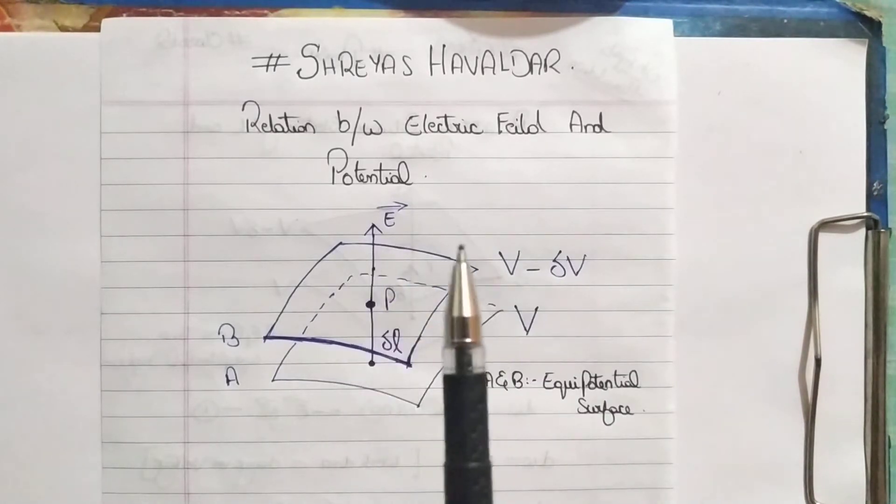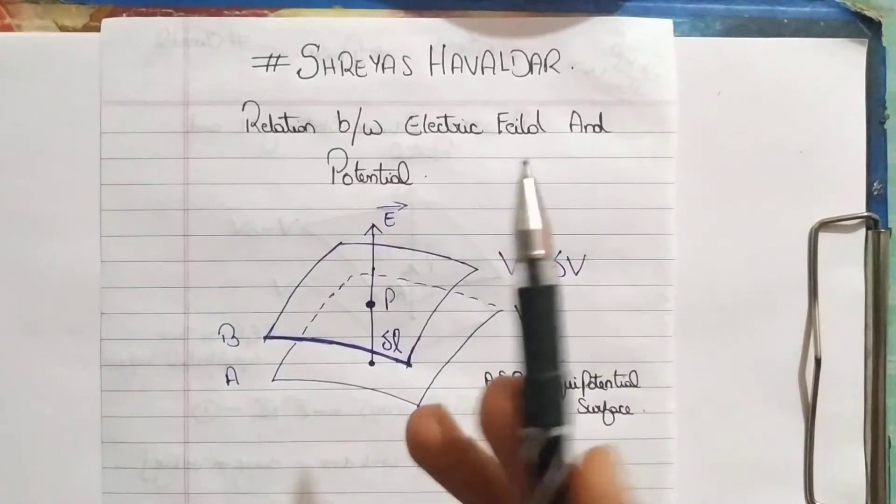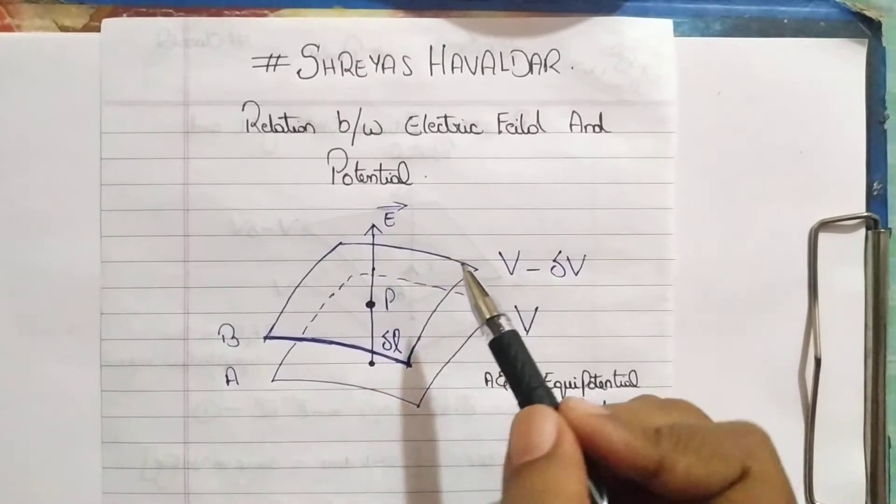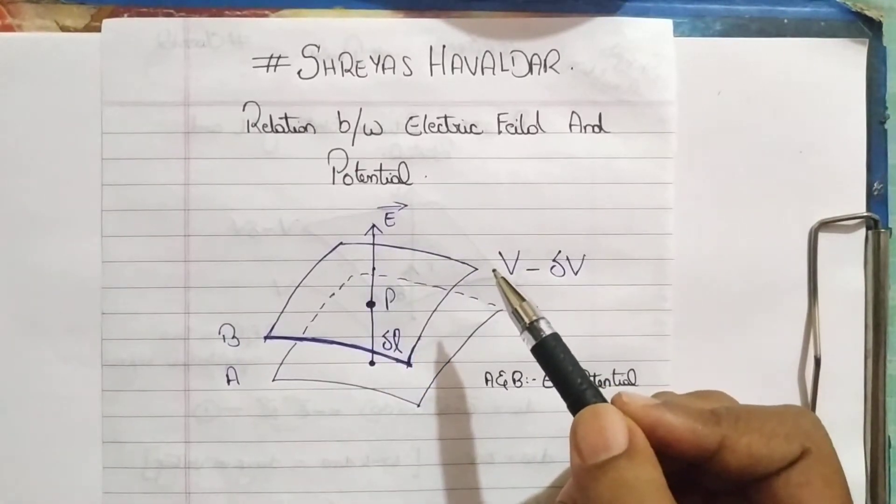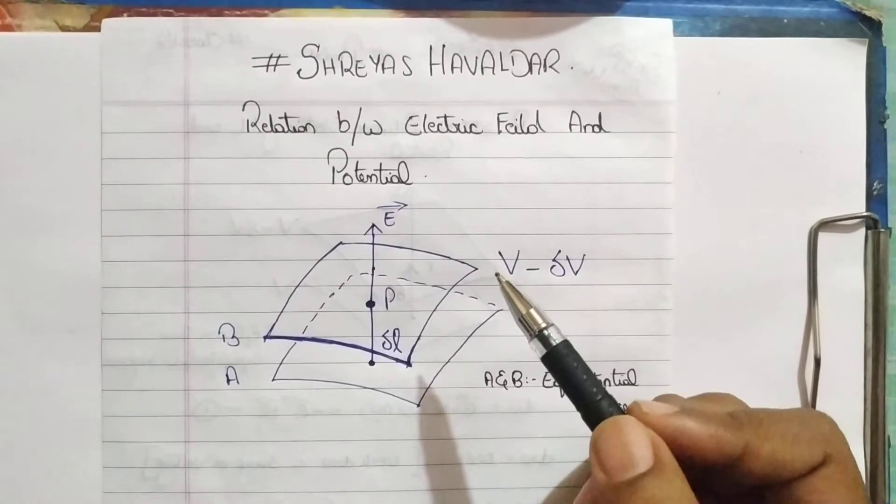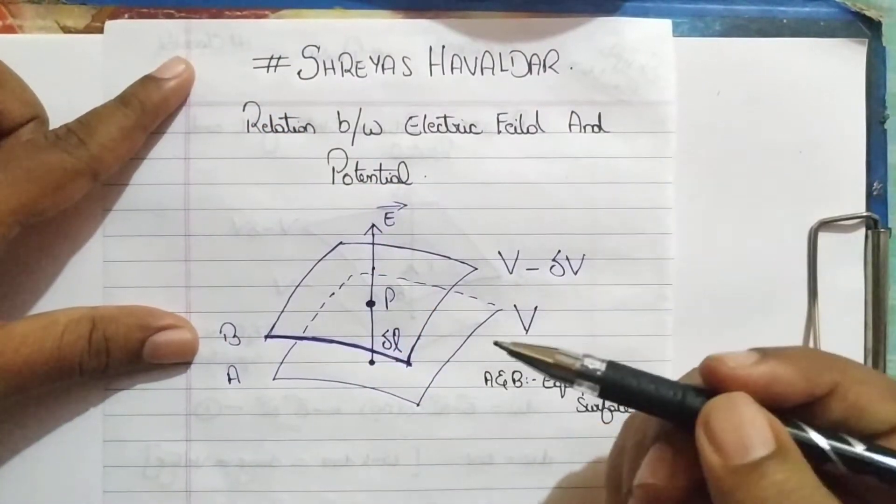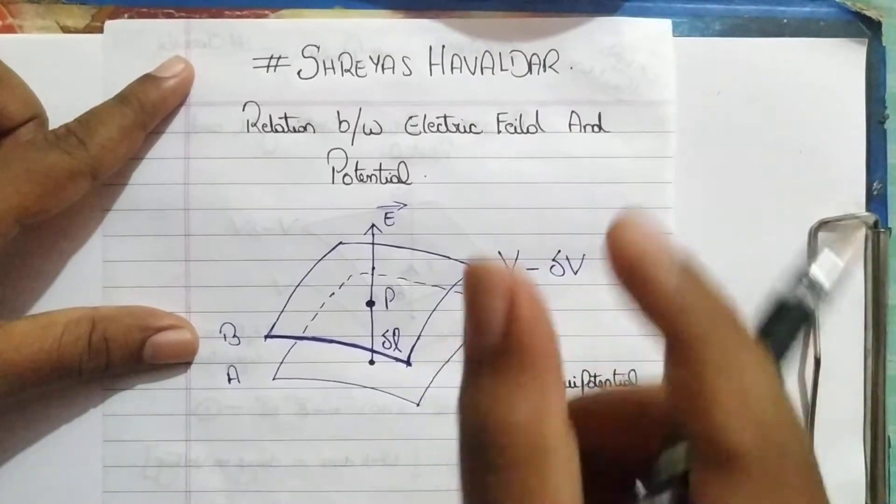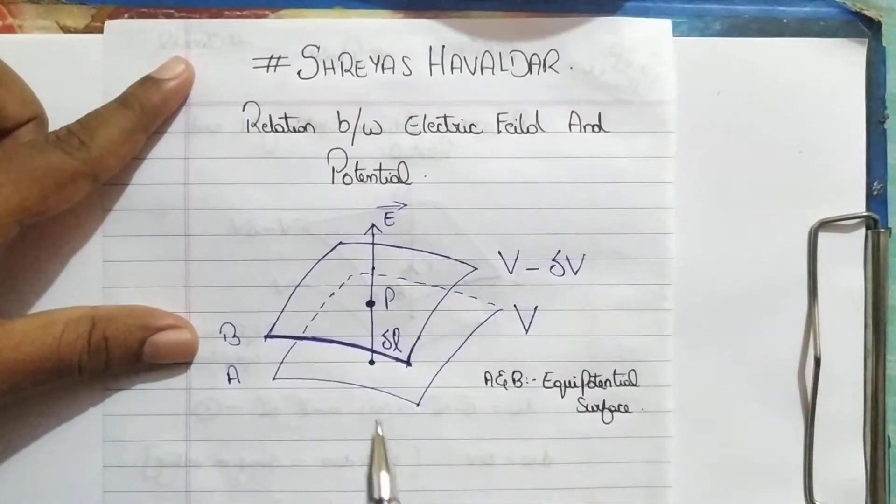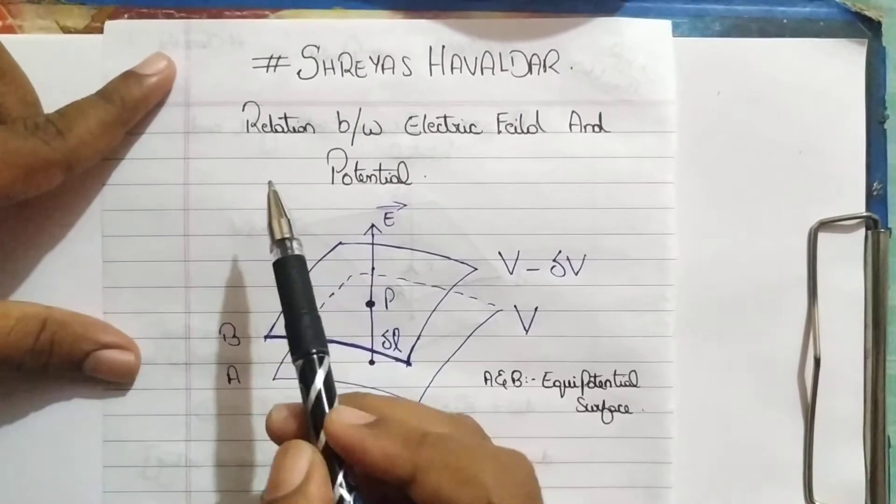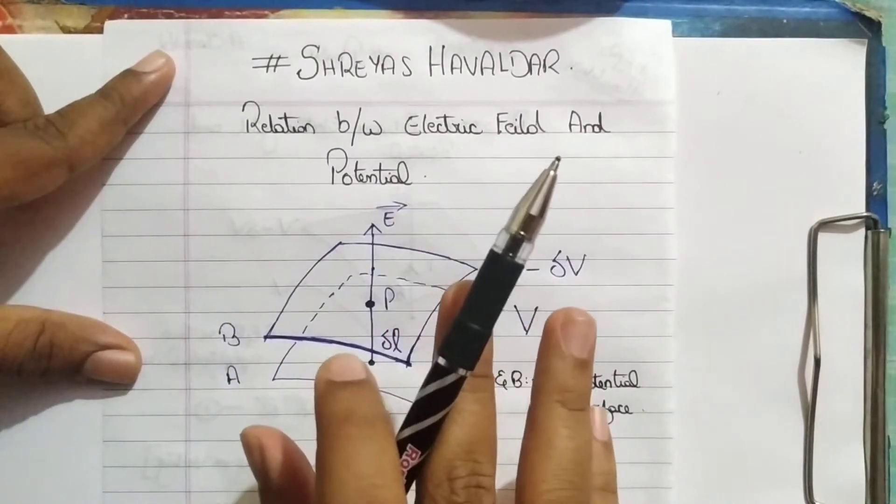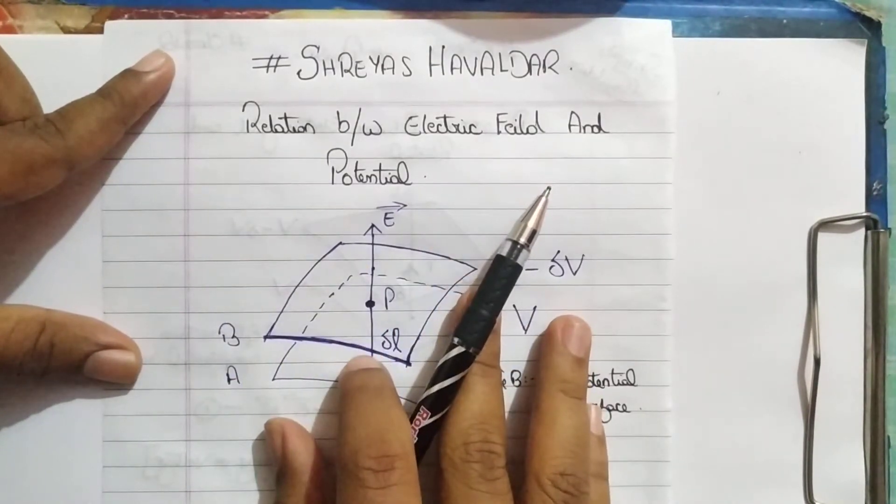There are about 30-35 derivations in your textbook and you need not to mug up all those things. Let's learn how to remember them and also how to solve them in a conceptual way within a short time. We are now in chapter 2, that is electrostatic potential and capacitance, solving the derivation of relation between electric field and potential.